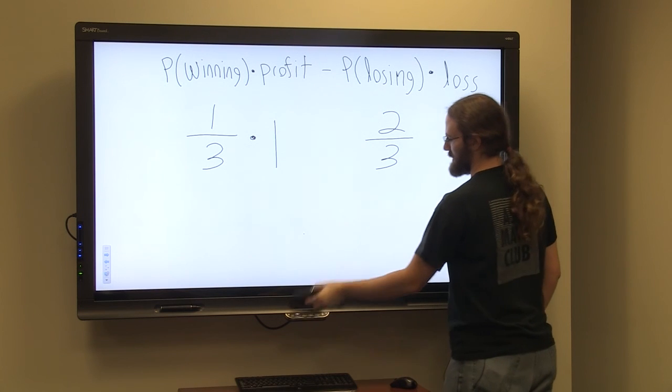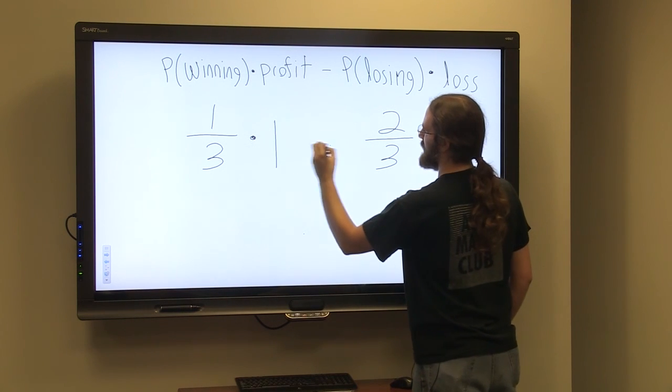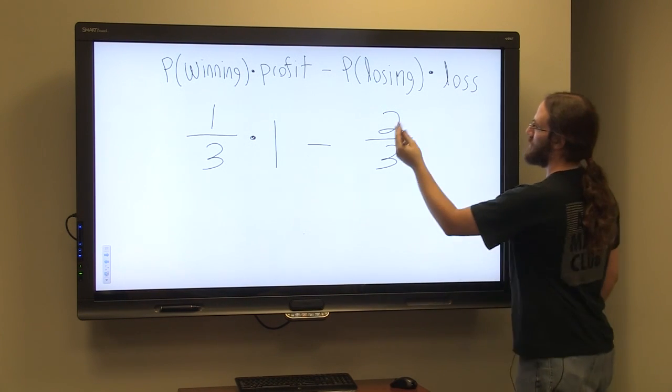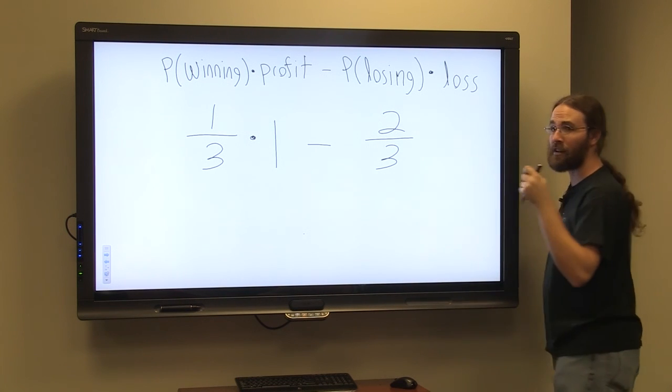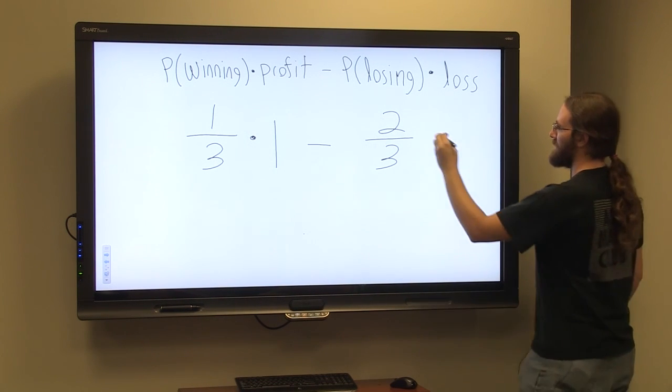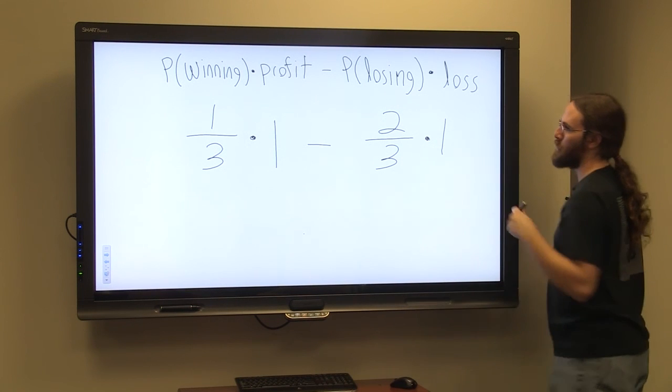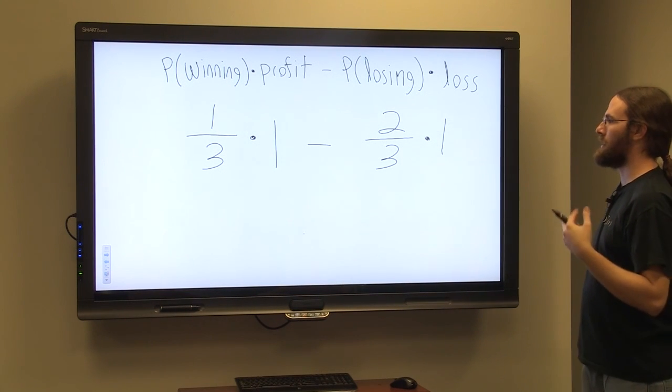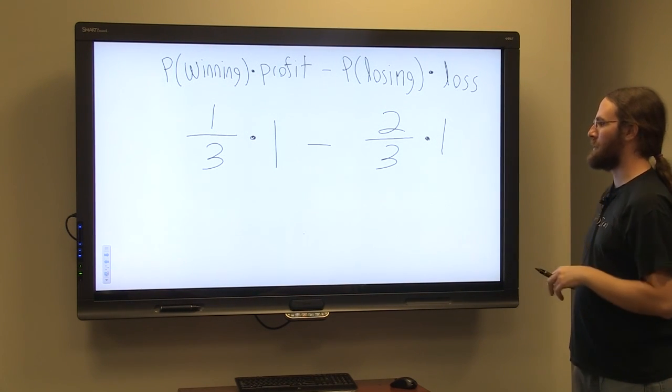Minus, I'm going to move my subtraction sign a little bit closer here, minus two thirds times, and it costs a dollar to play the game, so times one. So we're doing one third times one minus two thirds times one.